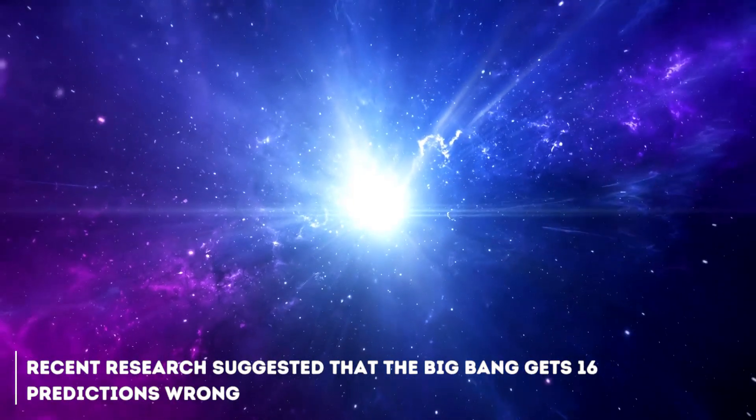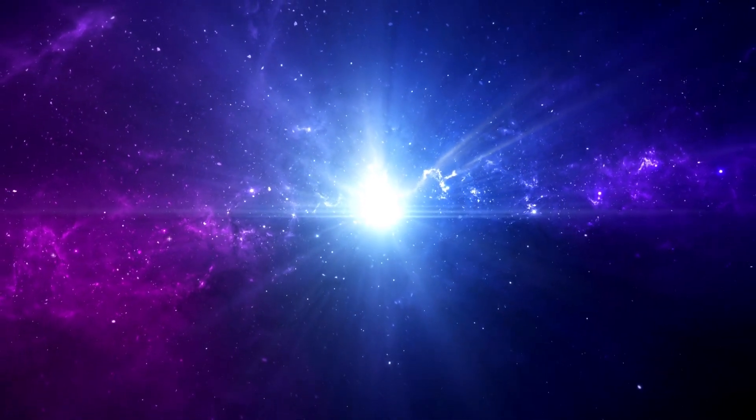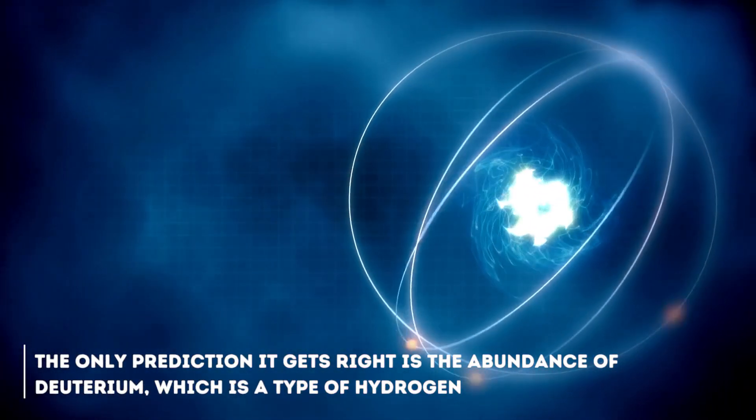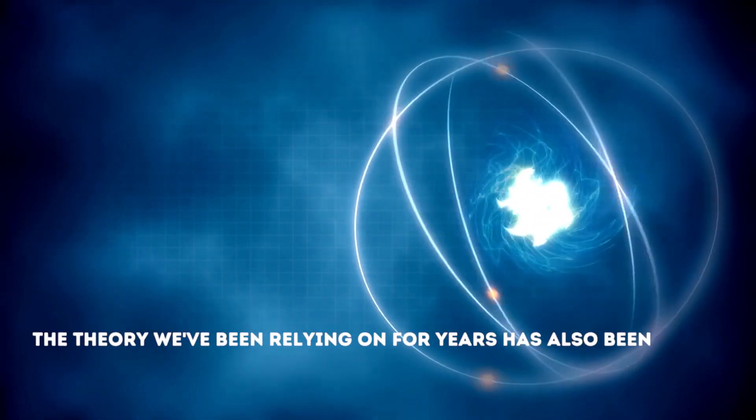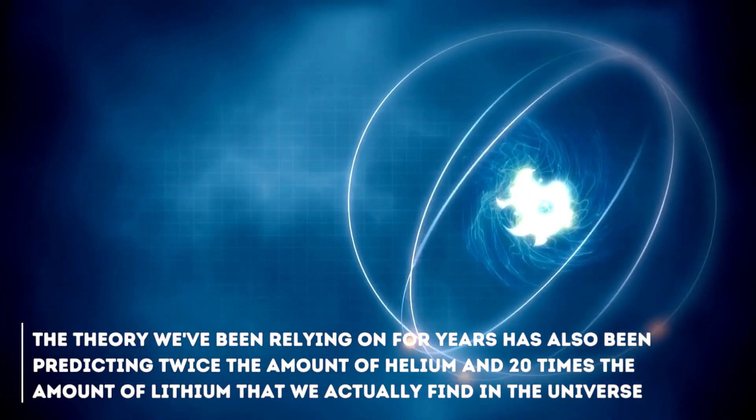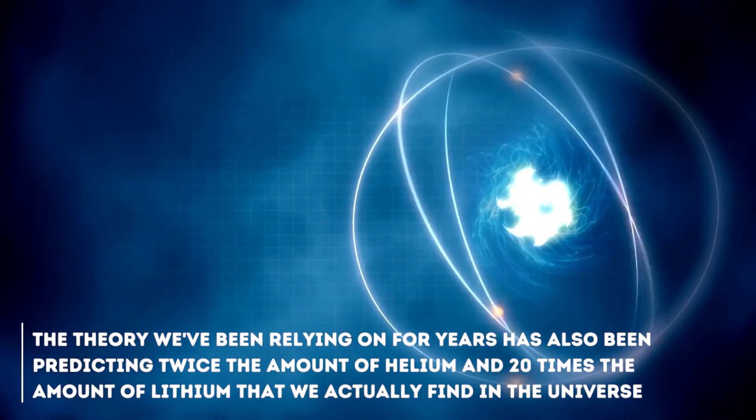Recent research suggested that the Big Bang gets 16 predictions wrong. Yes, 16. The only prediction it gets right is the abundance of deuterium, which is a type of hydrogen, but that's not all. The theory we've been relying on for years has also been predicting twice the amount of helium and 20 times the amount of lithium that we actually find in the universe.